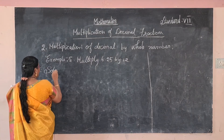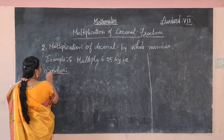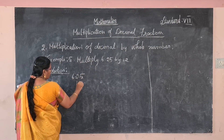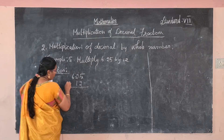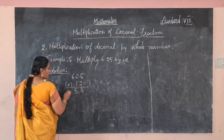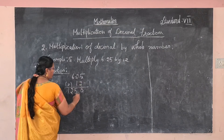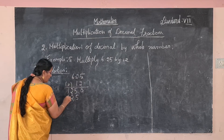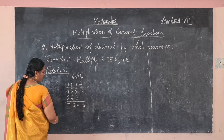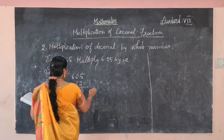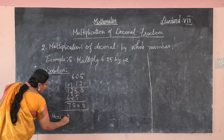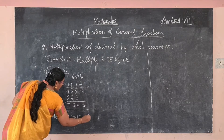Example 5: multiply 6.25 by 12. Calculate as usual multiplication — 625 by 12. Two 5's are 10, carry 1; two 2's are 4 plus 1 is 5; two 6's are 12. Then one 5 is 5; one 2 is 2; one 6 is 6. Adding: 625 into 12 equals 7500.